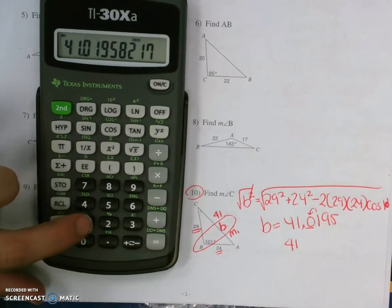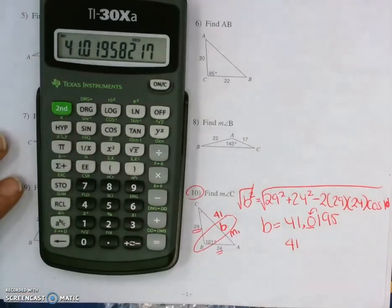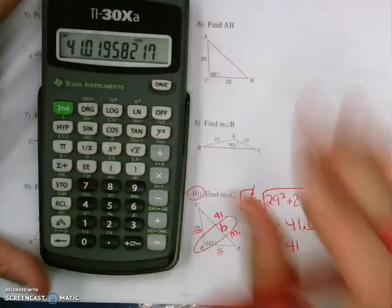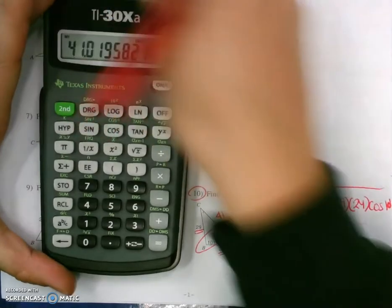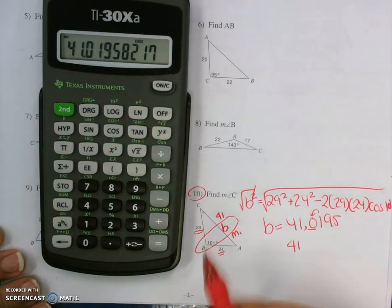Now I have everything under the radical, square root button. B equals 41.0195, so it's just going to be 41, and I'm going to store this in memory one. So store one. Now it says M1, so I know I have something stored in memory one.